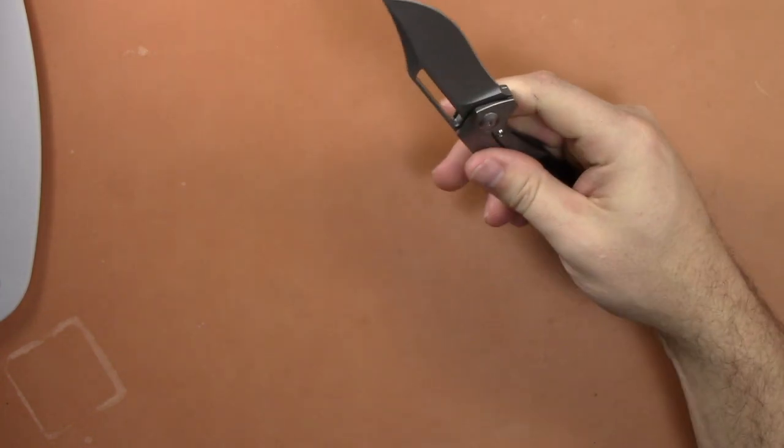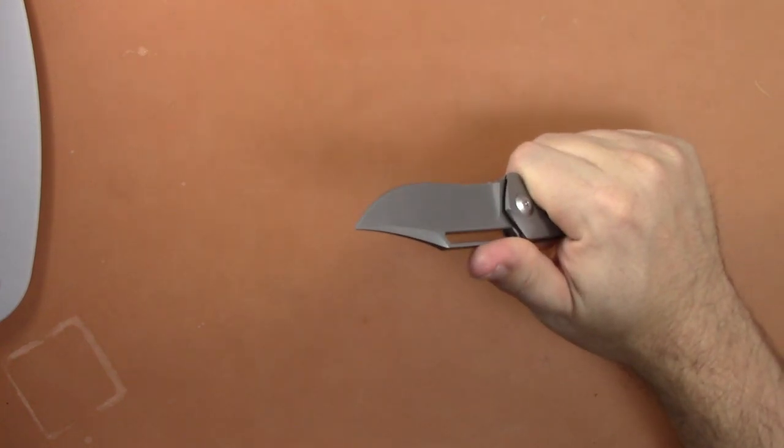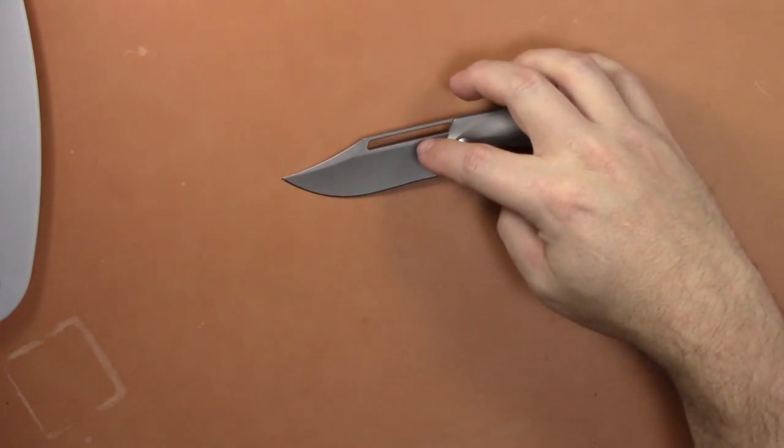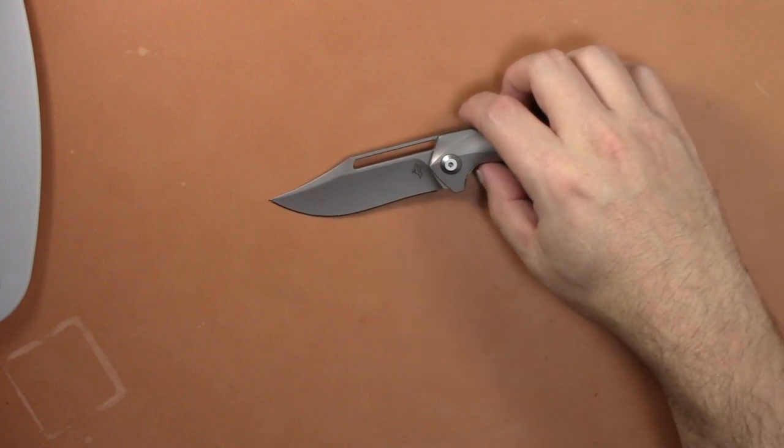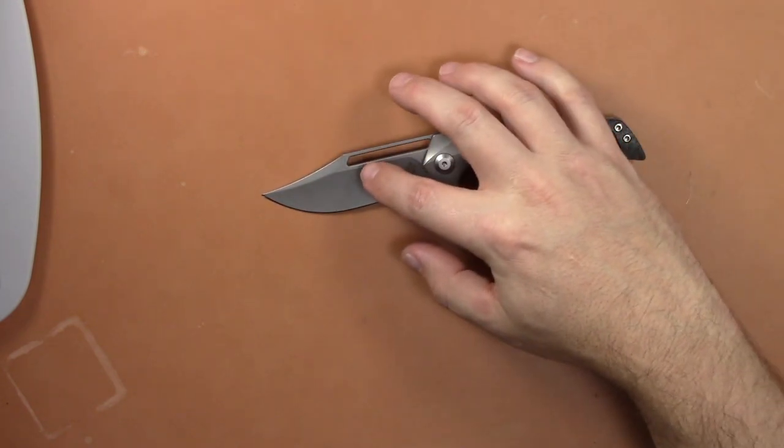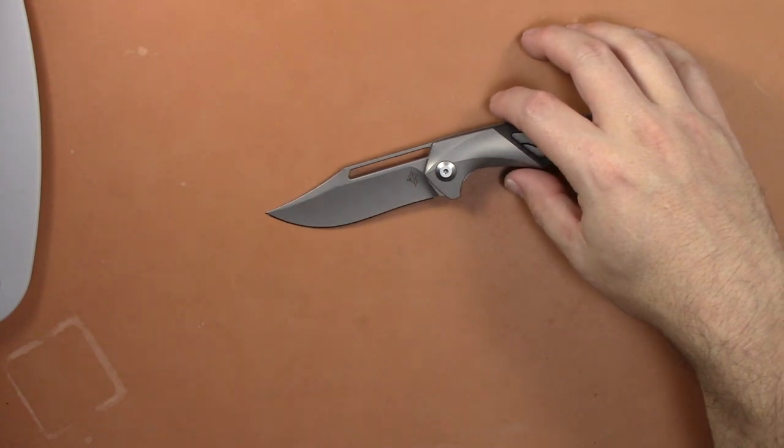Again, this is a collaboration with WeKnives, and this has a 3 1/4-inch blade of M390 blade still, like I said. Carbon fiber titanium overlays. You have a modified Bowie blade.